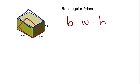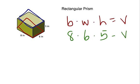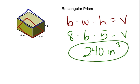On a rectangular prism there's actually more than just one base, but for this purpose we're going to use the base that has 8 by 6. The formula is base times width times height. The base is 8, the width is 6, and the height is 5. Multiplying all together: 8 times 6 is 48, times 5 is 240. The unit is inches, and because volume is three-dimensional, the answer is 240 cubic inches.